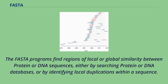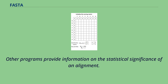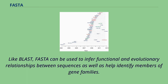The FASTA programs find regions of local or global similarity between protein or DNA sequences, either by searching protein or DNA databases or by identifying local duplications within a sequence. Other programs provide information on the statistical significance of an alignment. Like BLAST, FASTA can be used to infer functional and evolutionary relationships between sequences as well as help identify members of gene families. Thanks for watching.